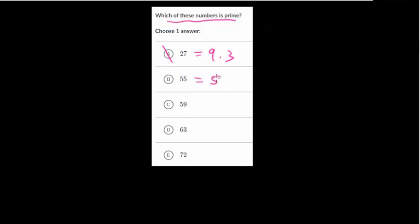So let's go through. Now 27 is divisible by 3, in fact it's just 9 times 3, so that's not prime. 55 ends in a 5 so it's divisible by 5, and if you divide it by 5 it's 11, so 5 times 11 is 55.